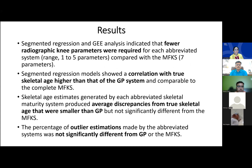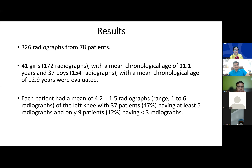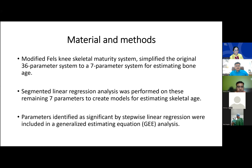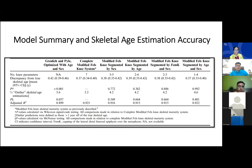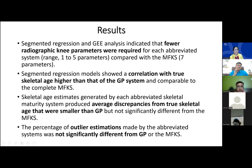Segmented regression indicated that fewer radiographic knee parameters were required for each abbreviated system — a modification of the modified Fells system. Four patterns were identified: modified Fells system by sex, by age, by FemK and sex, and by age and sex. These were compared with the complete modified Fells system and the Greulich-Pyle atlas. Each abbreviated system required fewer parameters than the original seven.